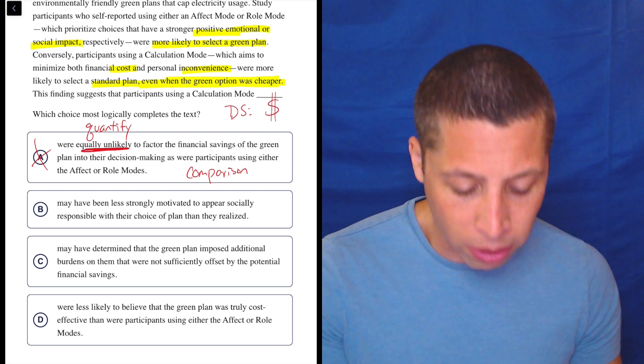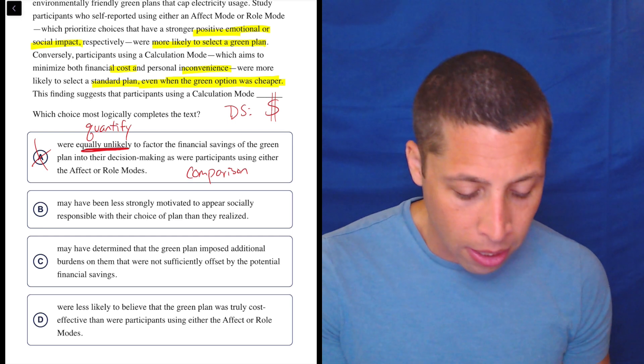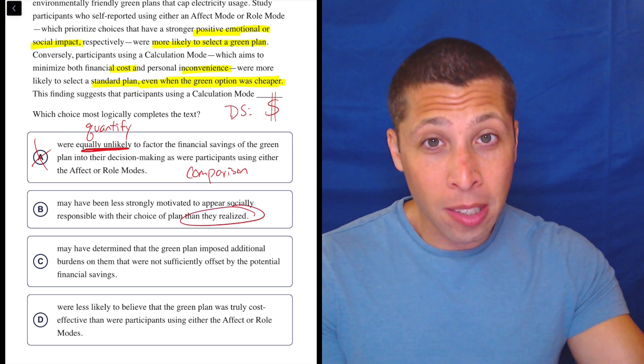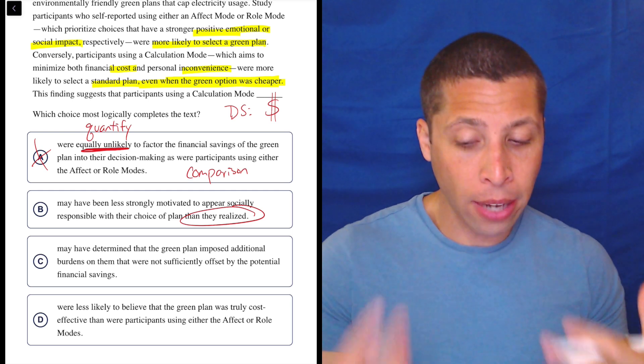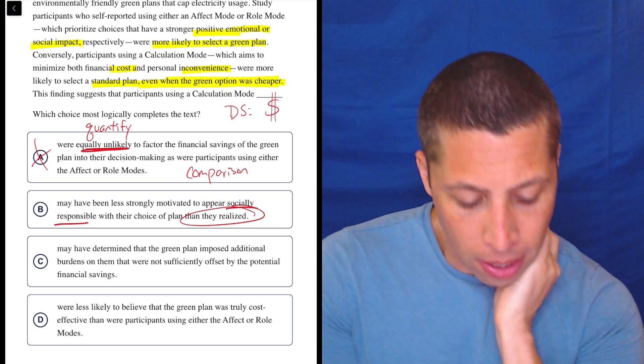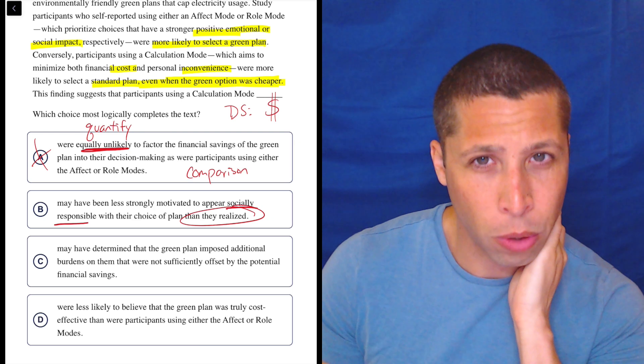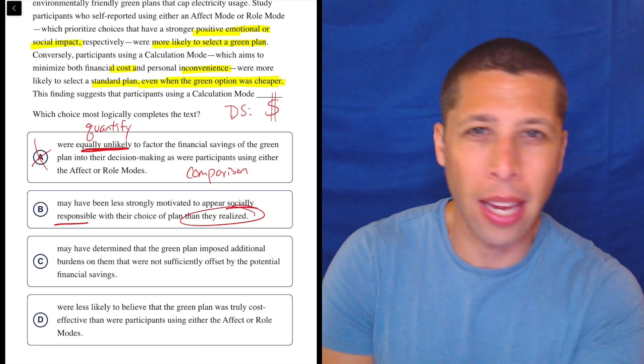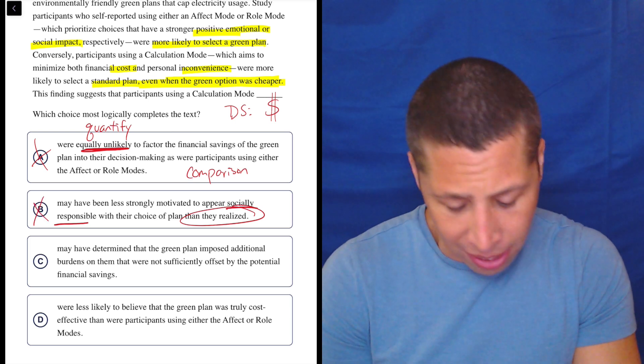B, they may have been less strongly motivated to appear socially responsible with their choice of plan than they realized. Do we talk about what they thought in this at all? Do we talk about what their intention was? I don't think so. Plus, the social responsibility thing, that's not the calculation mode. That's the other modes. So we're trying to talk about the calculation mode. I don't think the social responsibility thing matters at all for them. It wasn't a factor.